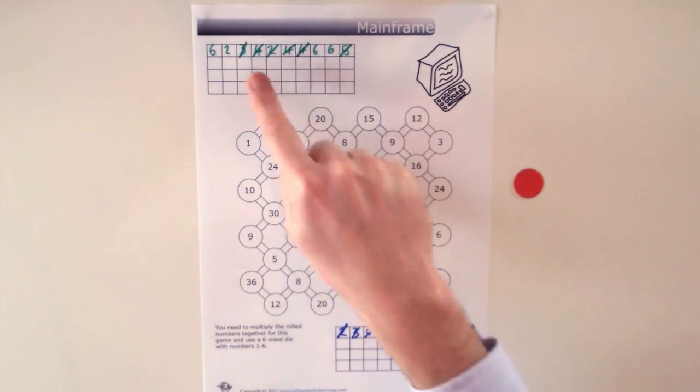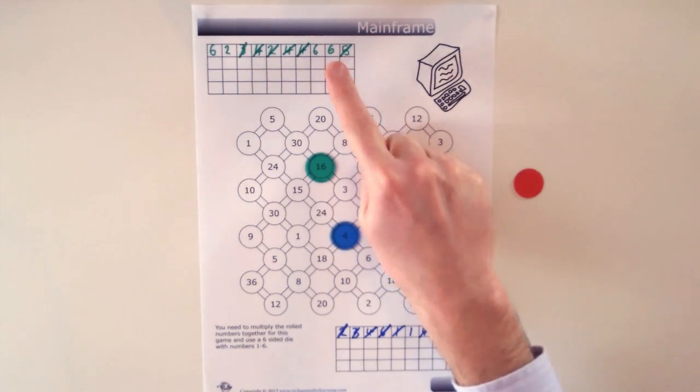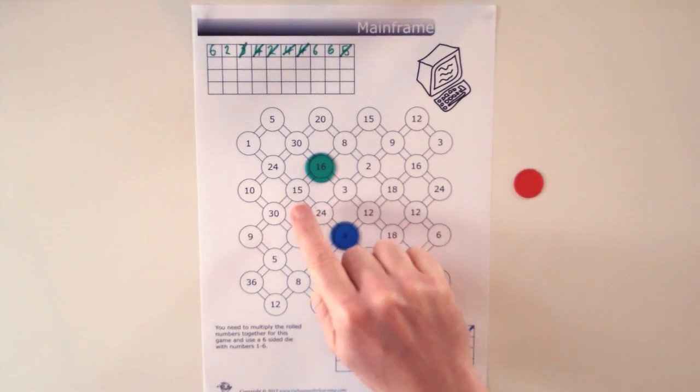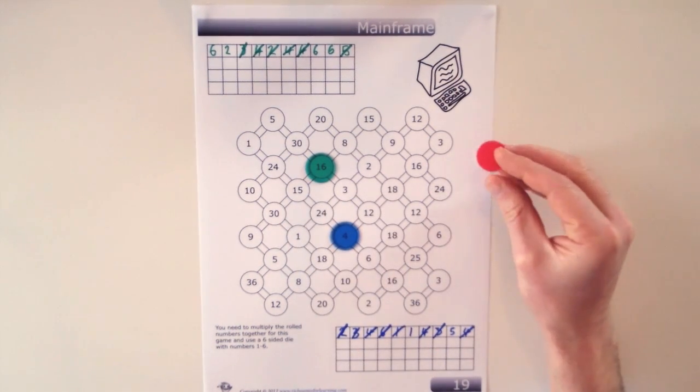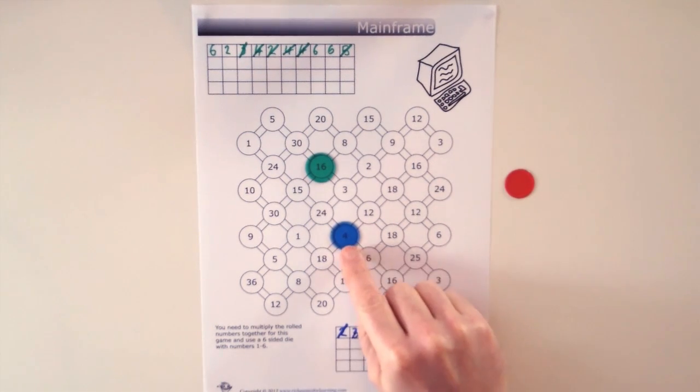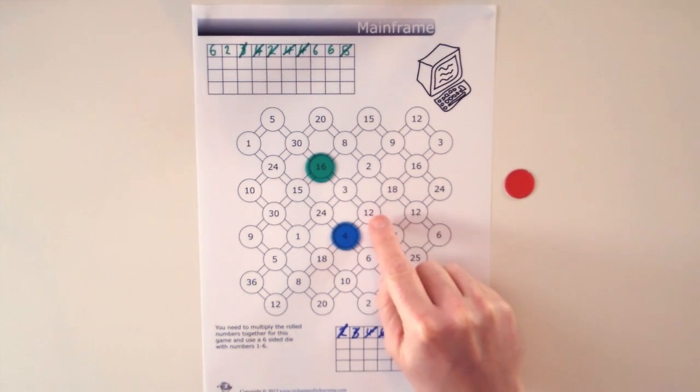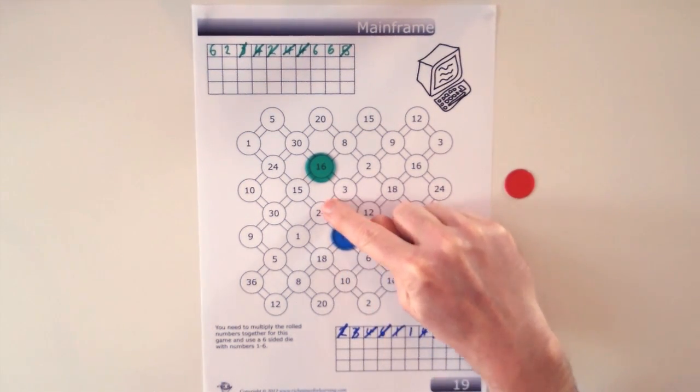Now there is nothing that green can multiply together from their numbers to equal 3 or to 15. So what they are going to do is they are going to use the blocker. Now have a look at blue here. Blue is going to move to either a 12 or a 24.